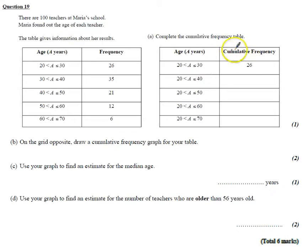The table gives information about her results. Complete the cumulative frequency. Well, two things. One, cumulative frequency is like an accumulation. We add up as we go along, but also we can see from the groups here. This group is between 20 and 30, so is this one, so that's why that frequency or cumulative frequency is 26.